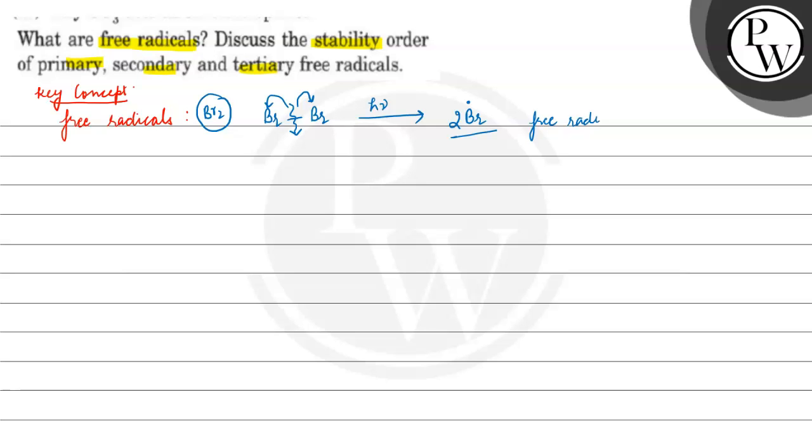First of all, free radicals are those atoms or groups having an odd or unpaired electron.